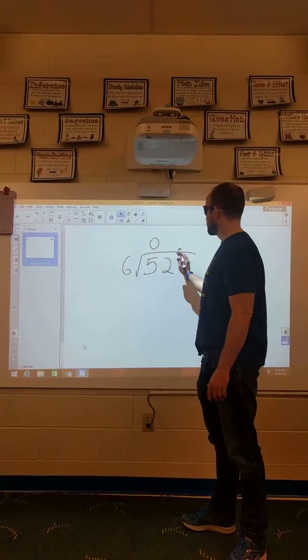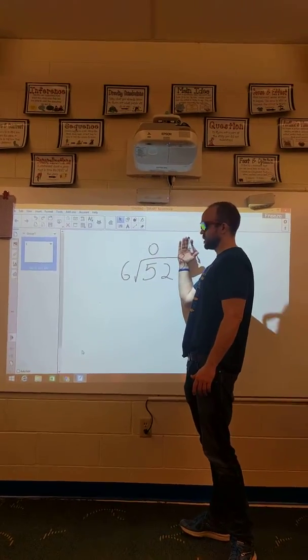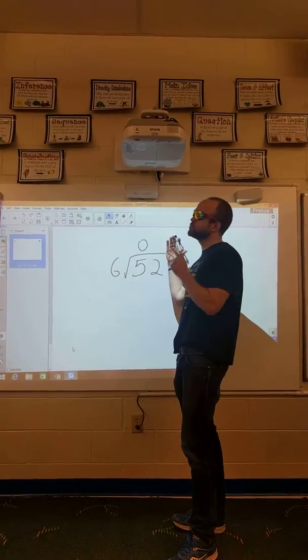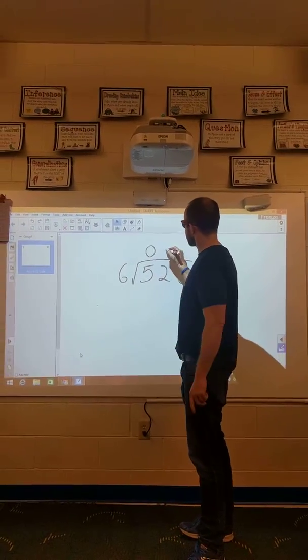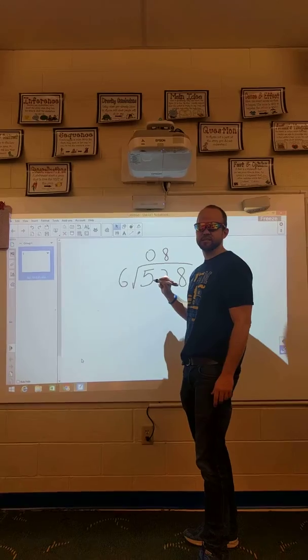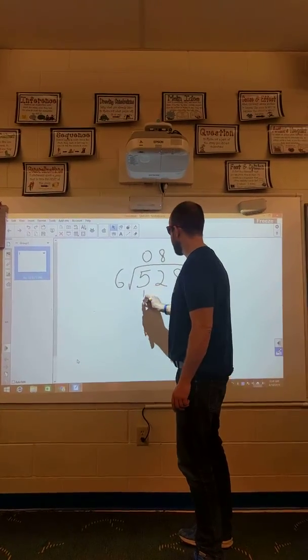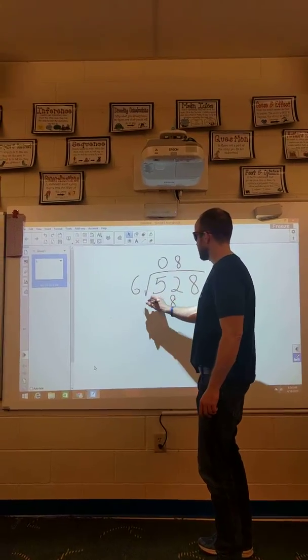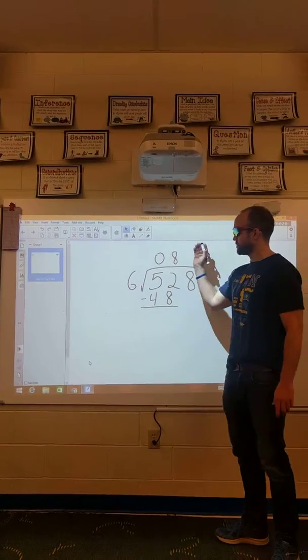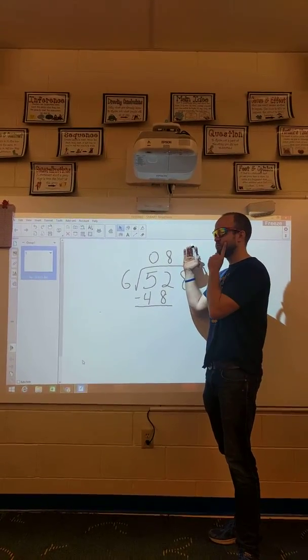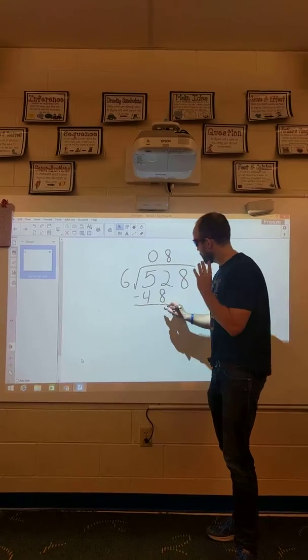So now I have 52. So now I'm just looking at the 52. How many times would 6 go into 52? 8 times. 8 times 6 is 48. Now I can subtract that out to see what I have left over. 52 minus 48 is 4.